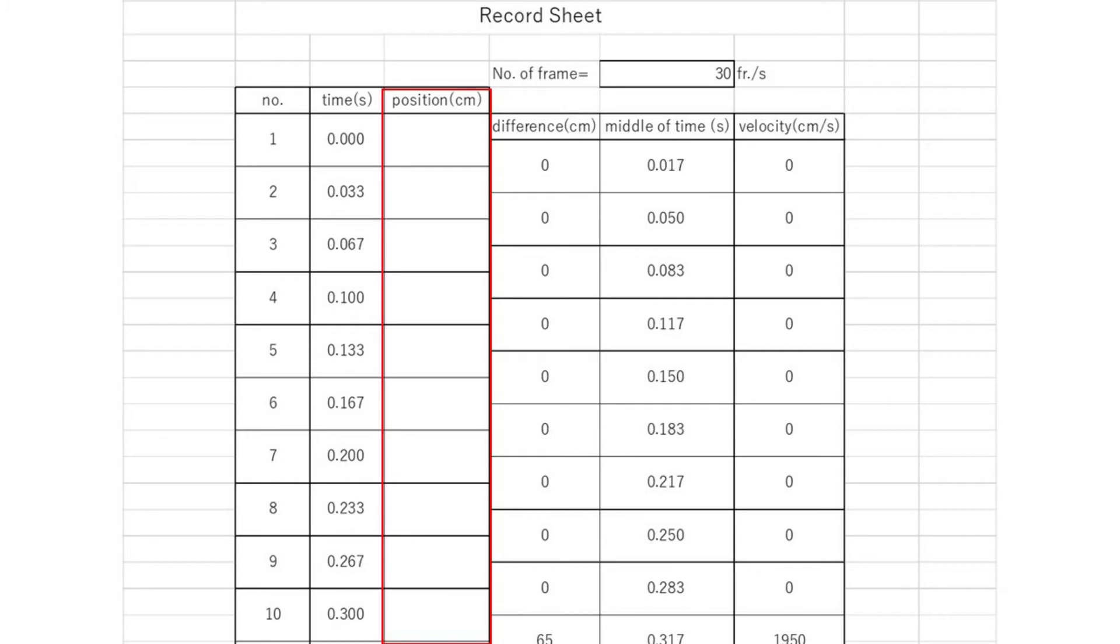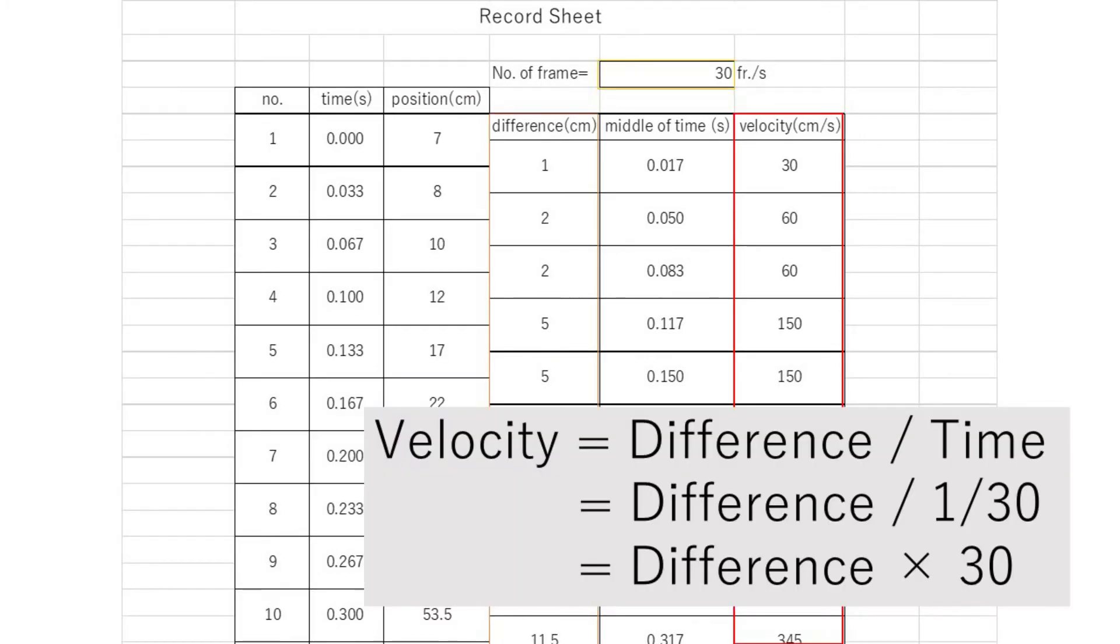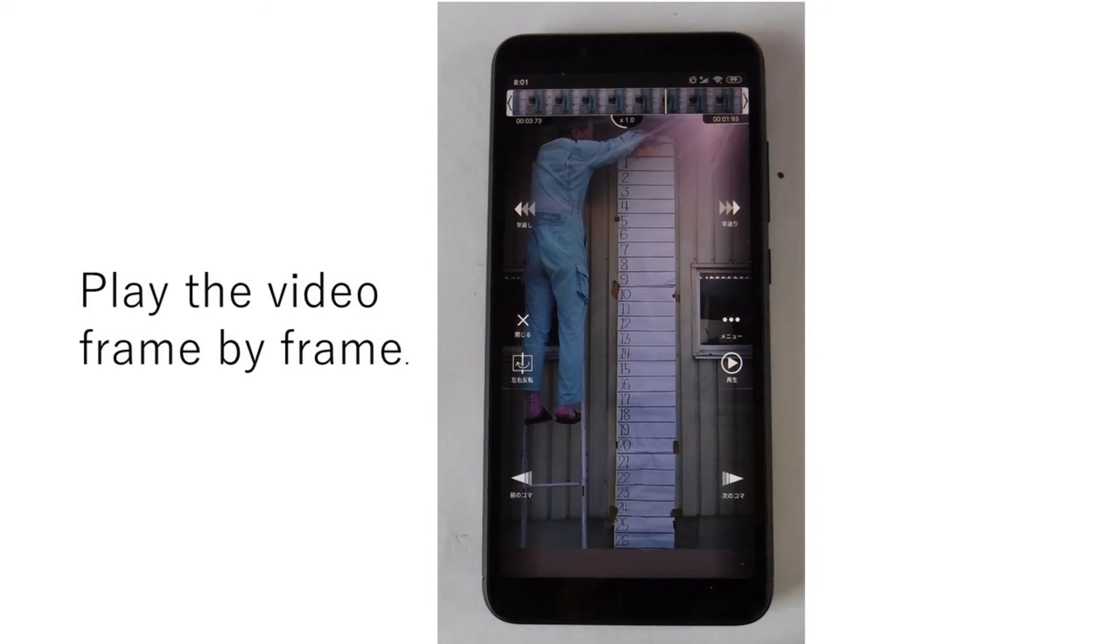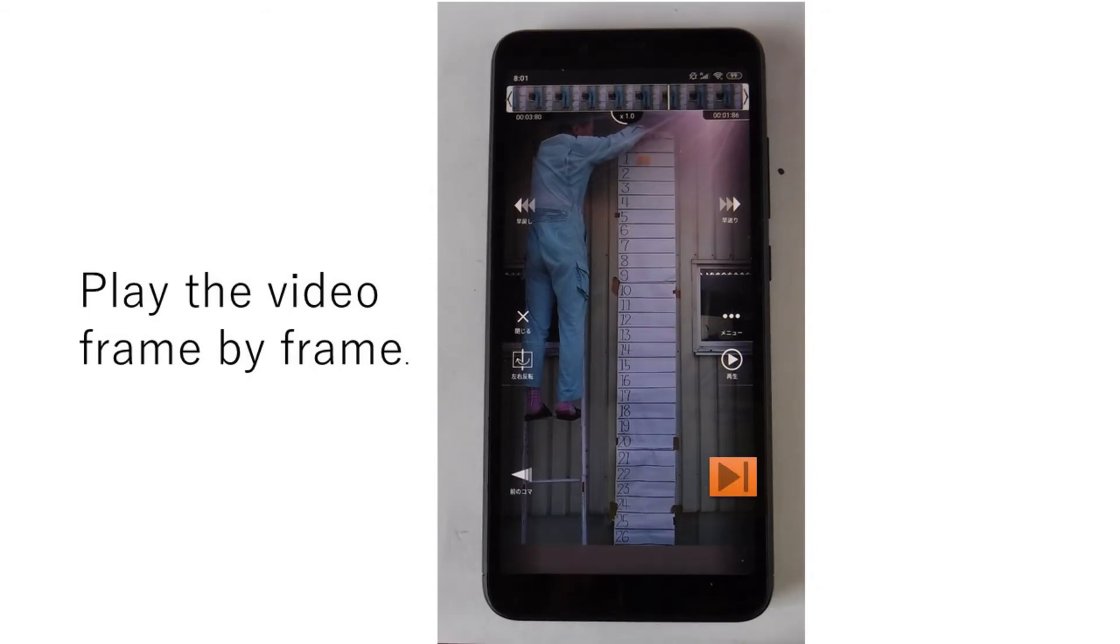The positions are read from smartphone screens. The velocity is calculated from position difference and time. Frame-by-frame function is used for reading the ball positions.